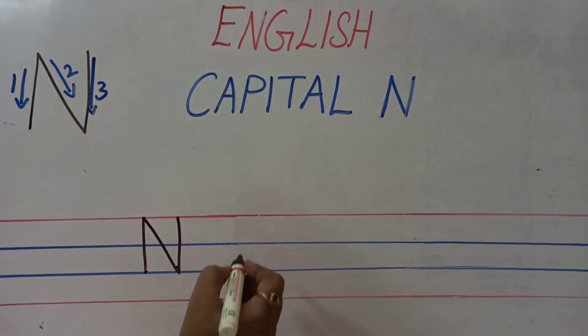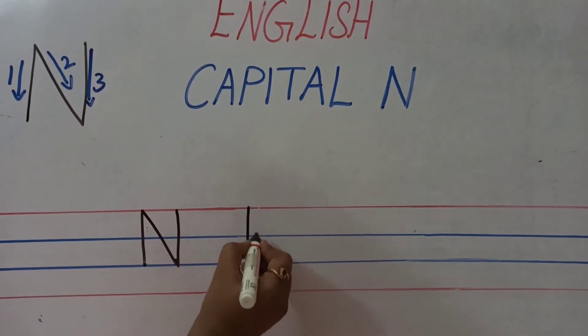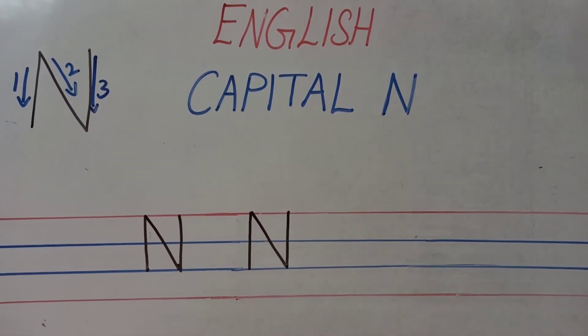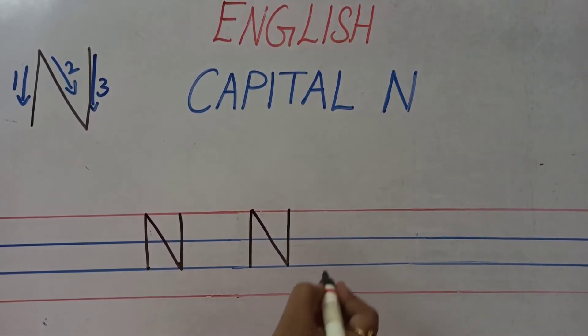One more time. Standing line. One more time. Standing line, slanting line, and one more standing line. What is this letter called? Capital N.